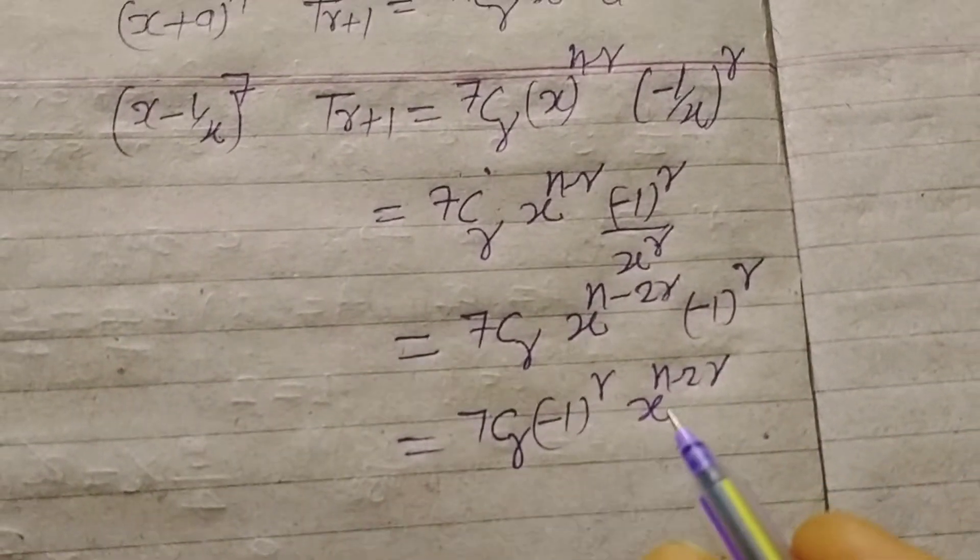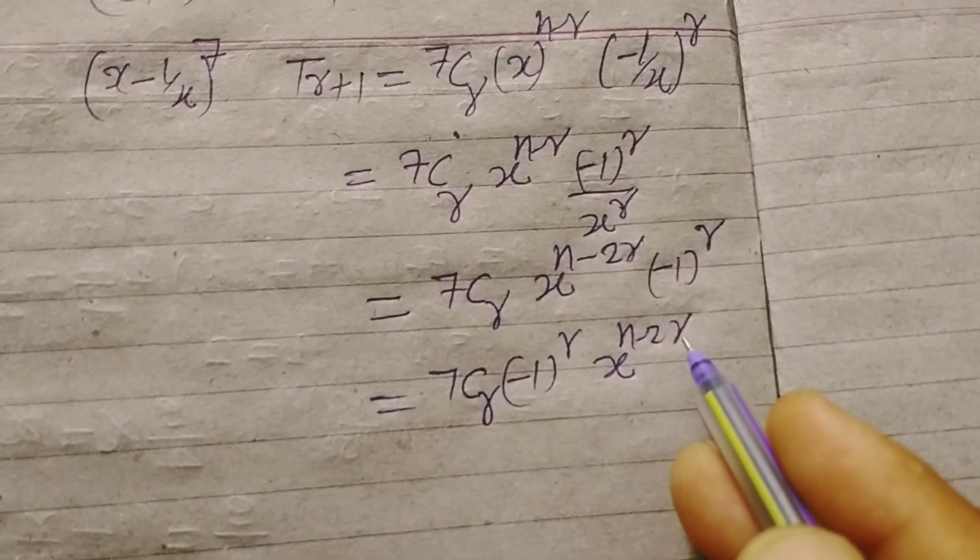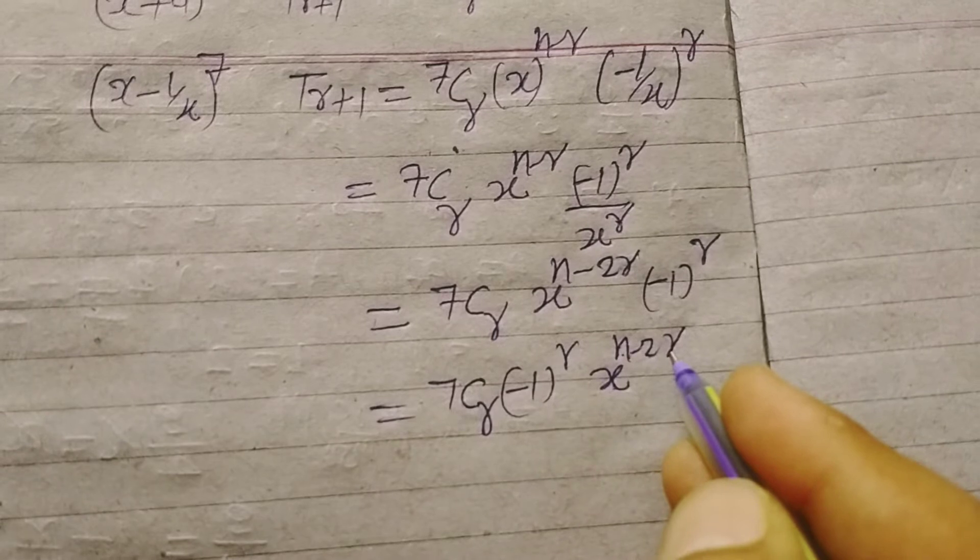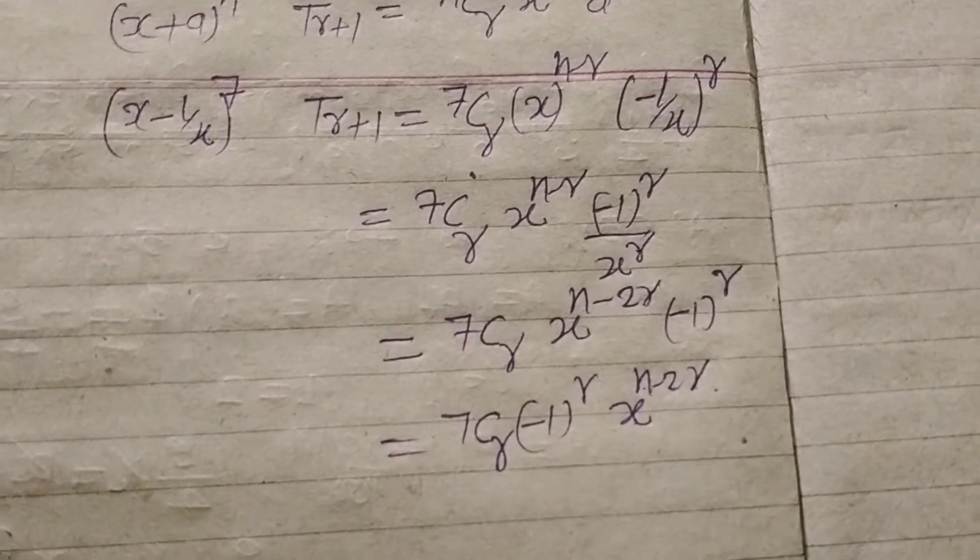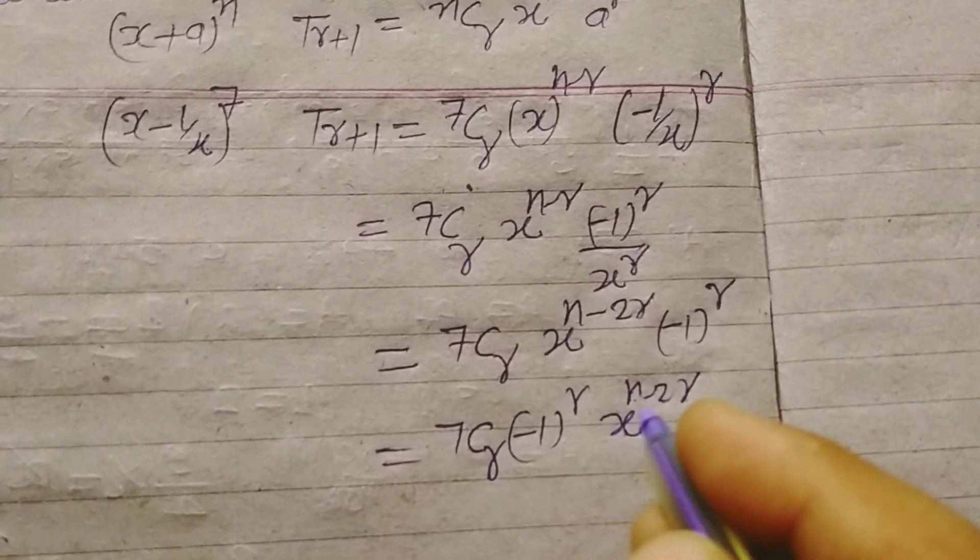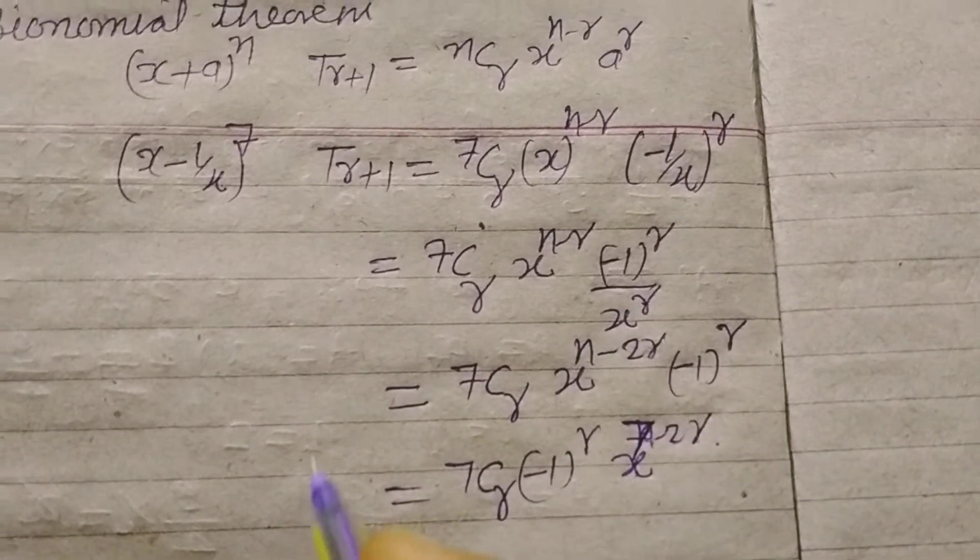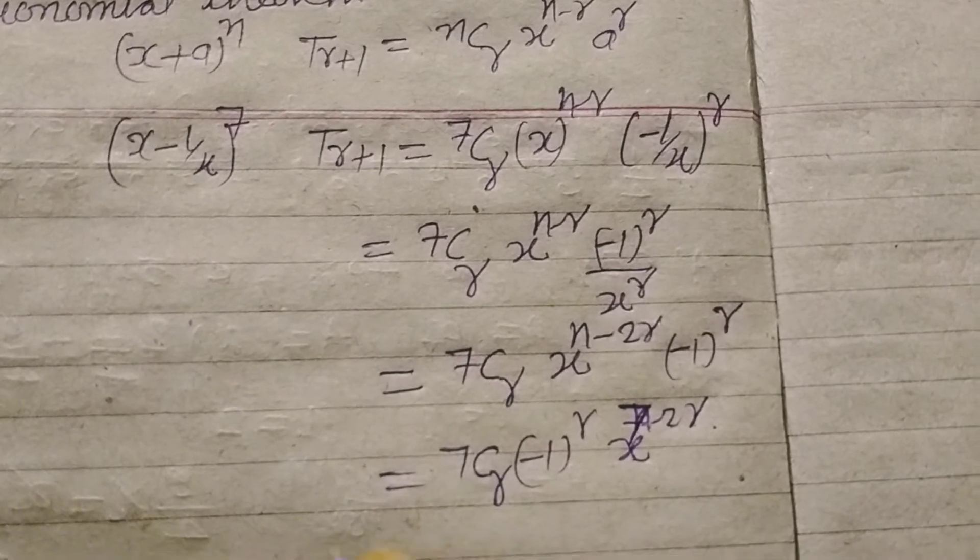If we want to find the coefficient of x to the power 3, then 7 minus 2r should be equal to 3. Here n is 7 from the given question.